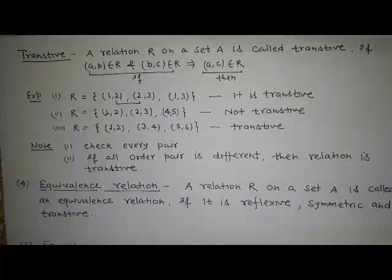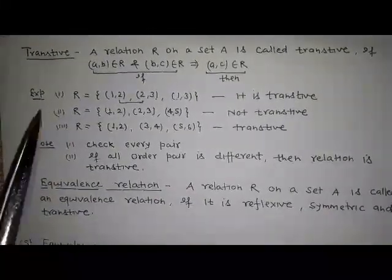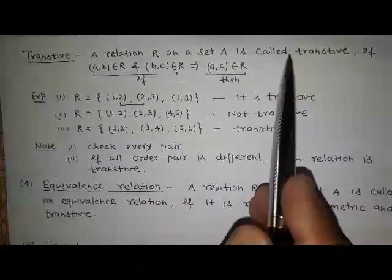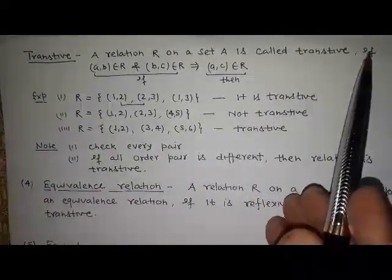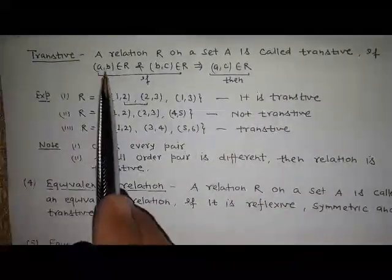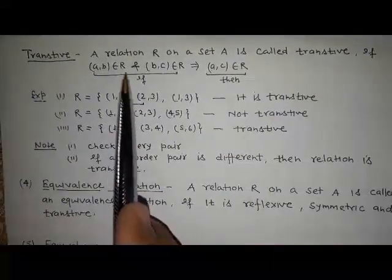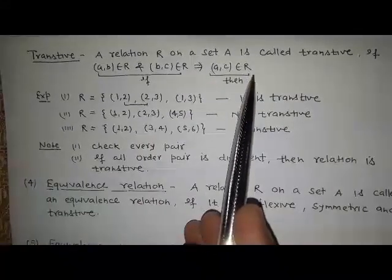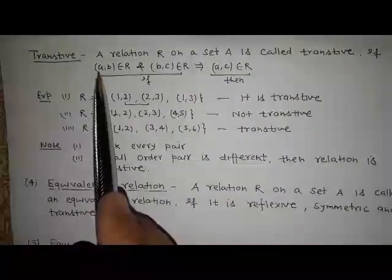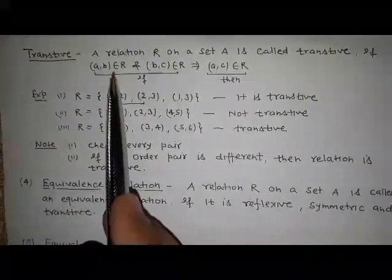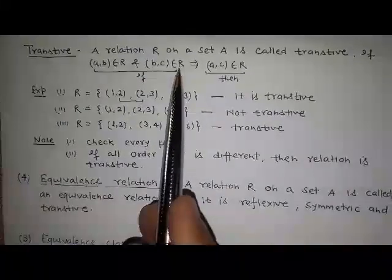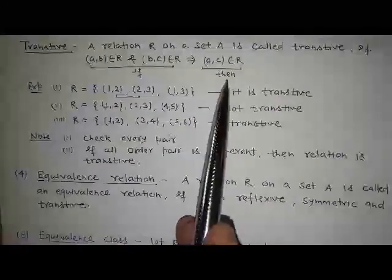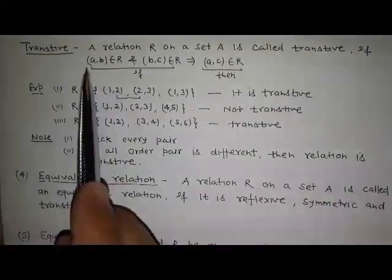Transitive relation: a relation R on a set A is called transitive if (a, b) is an element of R and (b, c) is an element of R, this implies (a, c) is an element of R. It means if (a, b) is present in the relation and (b, c) is also present in the relation, then (a, c) must also be present in the relation.